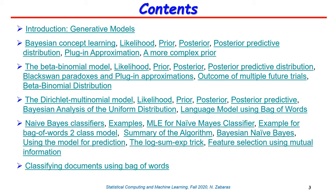At the end of the day we concluded that we often use point estimates to summarize the posterior distribution, such as the MAP estimate. A few lectures ago we discussed the maximum likelihood estimate, and in this lecture we also saw the posterior mean estimate, which is very different from the MAP estimate. For simple models like the beta-binomial and Dirichlet-multinomial, the predictive distribution can be summarized with a plug-in approximation where the parameter plugged in is the posterior mean, not the MAP estimate.